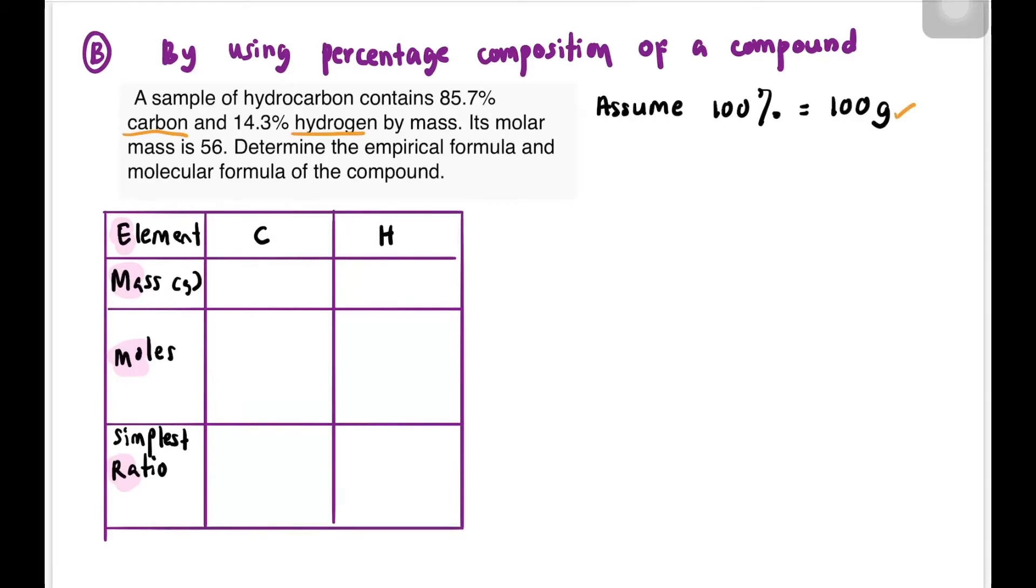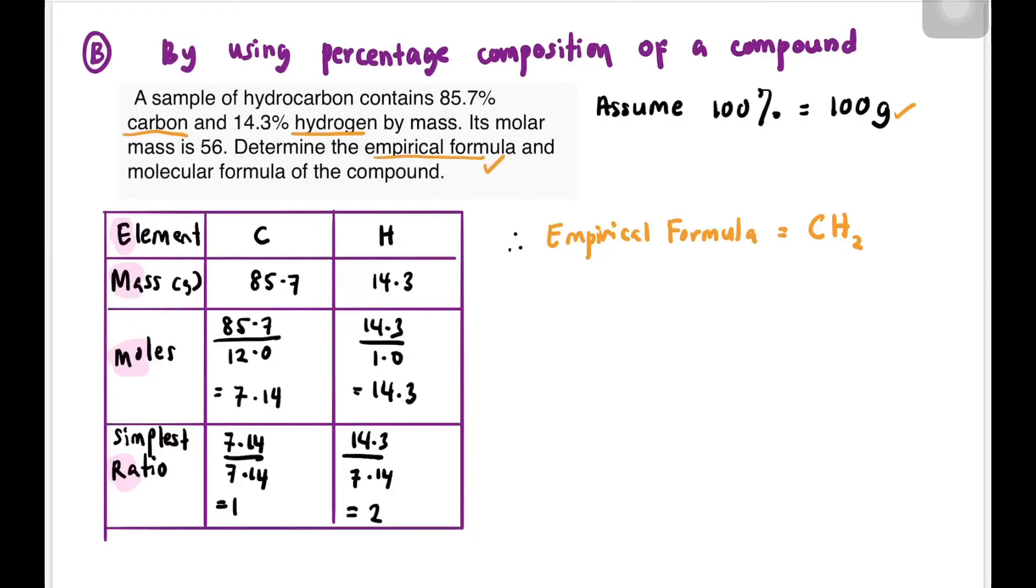If we have 85.7% carbon, that means 85.7 grams of carbon, and hydrogen has 14.3 grams. Now for moles: 85.7 divided by 12 (molar mass of carbon) and 14.3 divided by 1.0 (molar mass of hydrogen), and you get these values. As usual, to find the ratio, divide by the smallest mole, which in this case is 7.14. After dividing, we get C1H2, so the empirical formula for this hydrocarbon is CH2.